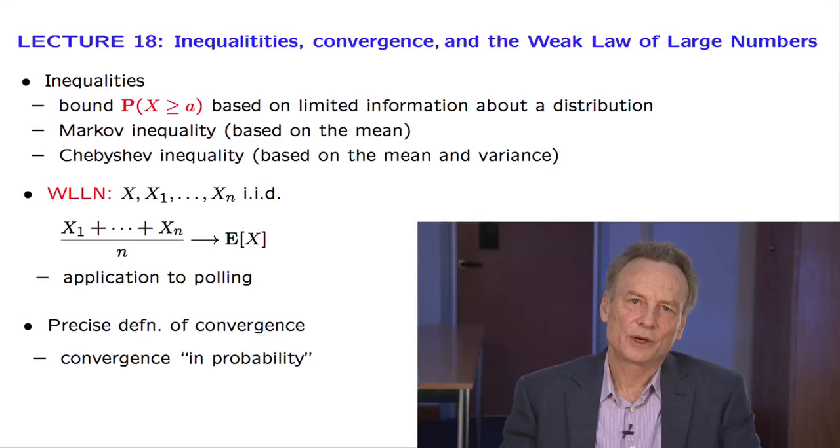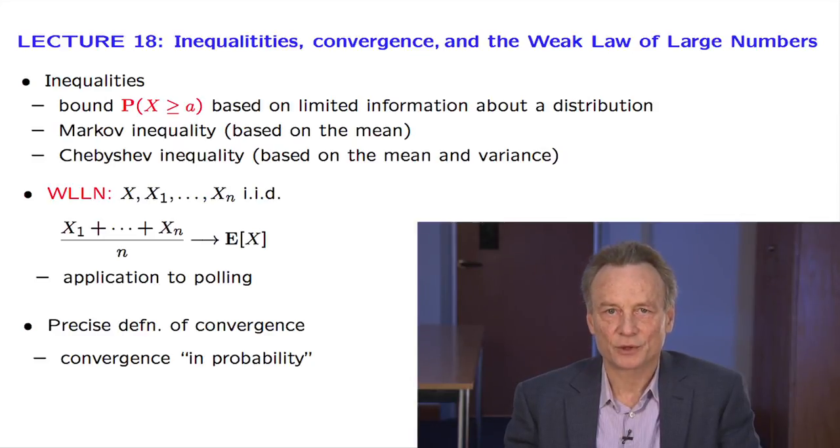The weak law of large numbers is the reason why polling works. By asking many people about the value of some attribute and by taking the average of the responses, we can get a good estimate of the average over the entire population.